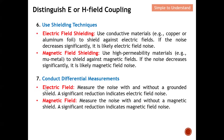We can also conduct targeted measurements. For electric field assessment, measure the noise with and without a ground shield — a significant reduction indicates electric field noise. For magnetic field assessment, measure with and without a magnetic shield — any significant reduction indicates magnetic field noise.